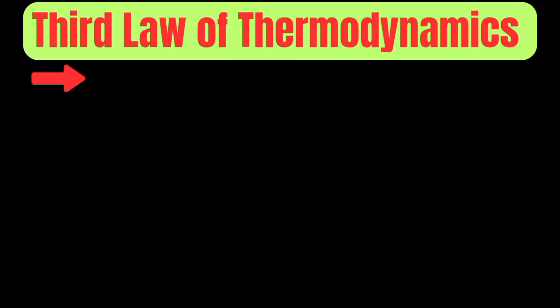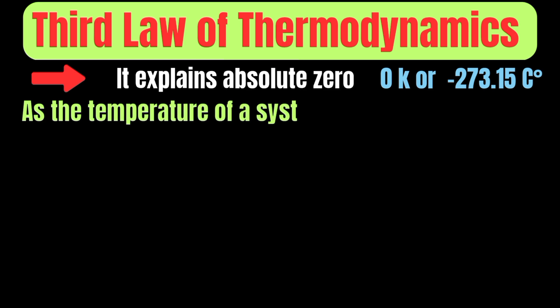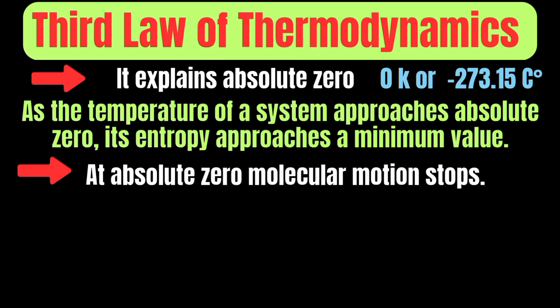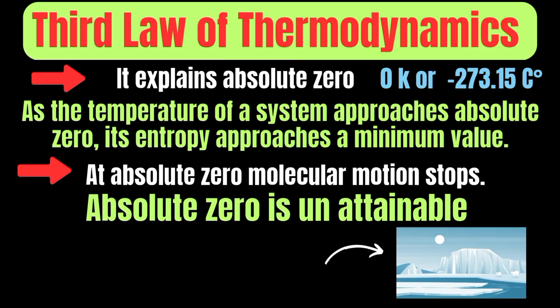The third law of thermodynamics tells us what happens at absolute zero temperature. Absolute zero refers to zero Kelvin, or minus 273.15 degrees Celsius. The third law states that as the temperature of a system approaches absolute zero, its entropy approaches a minimum value. This means that at absolute zero, all molecular motion stops and the system reaches perfect order. However, absolute zero is impossible to reach in practice because removing all heat energy completely is not possible — even in deep space, absolute zero has never been achieved.